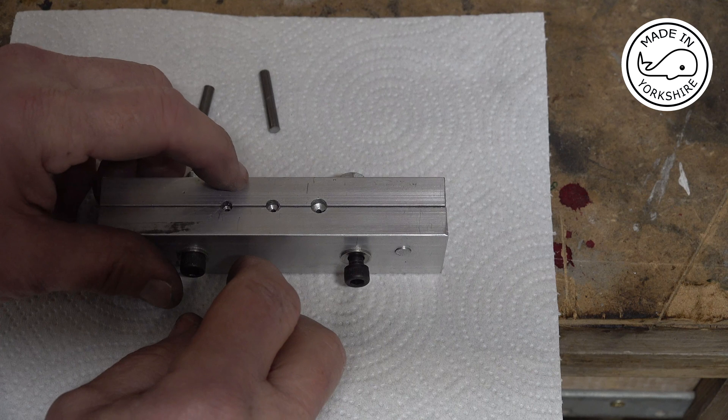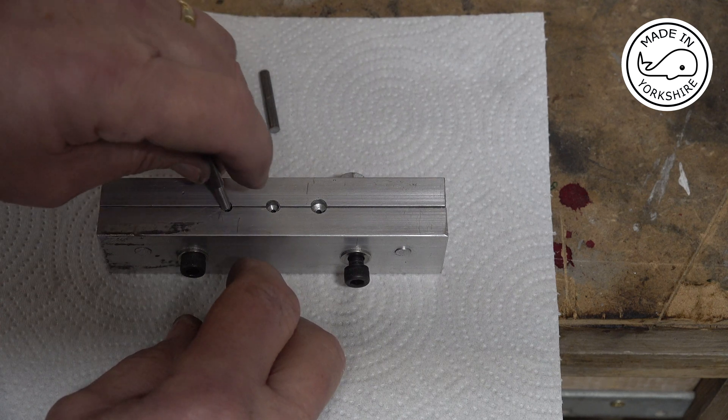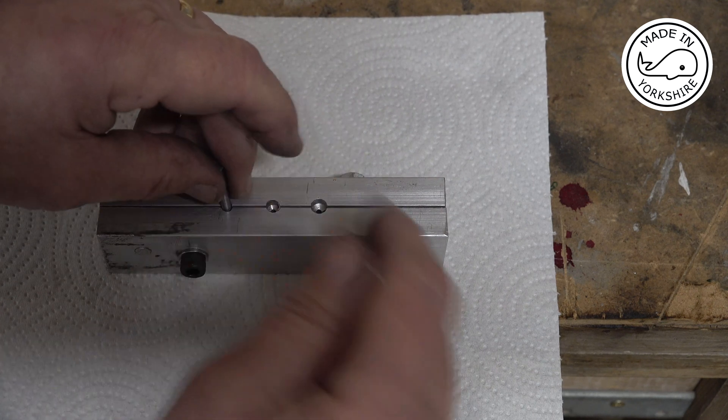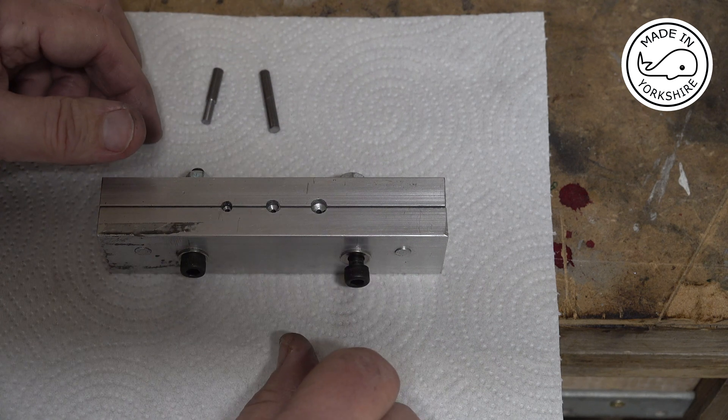So you can get the tool engaged first and just tap it with a hammer and it opens it up, splits it open.